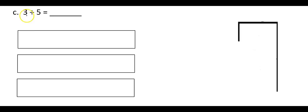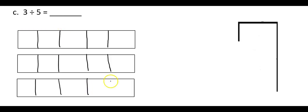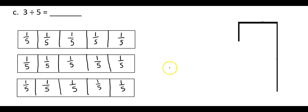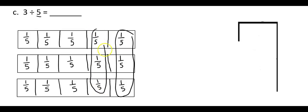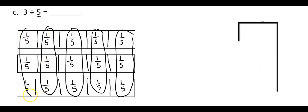Here's another example — this time I'm dividing 3 by 5. I have my 3 tape diagrams, and I'll start by dividing each one into 5 equal pieces, then label each piece as 1 fifth. Once everything is labeled, I divide it into 5 equal groups: group 1, 2, 3, 4, and 5. My answer is the amount in 1 group, which is 3 fifths. So the answer to 3 divided by 5 is 3 fifths.